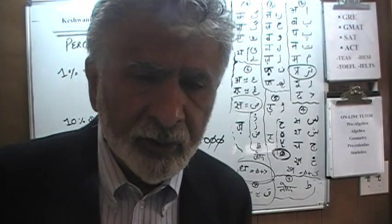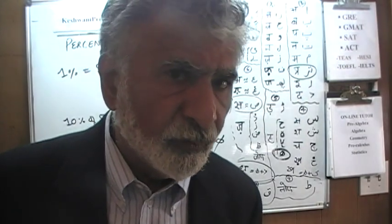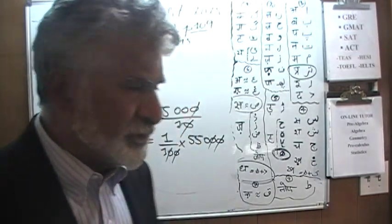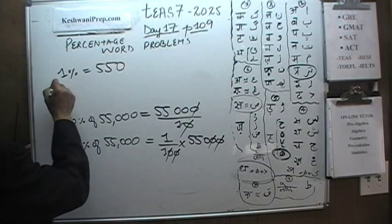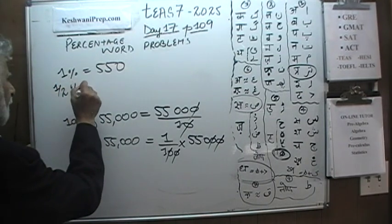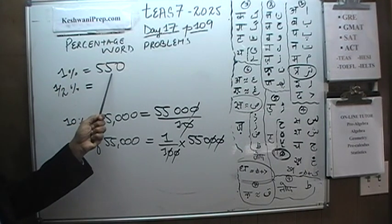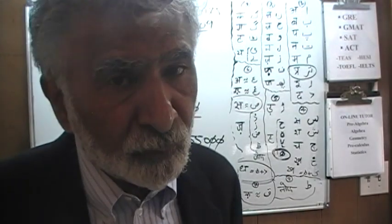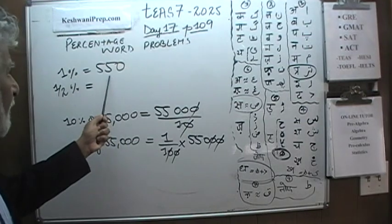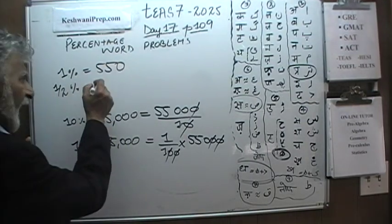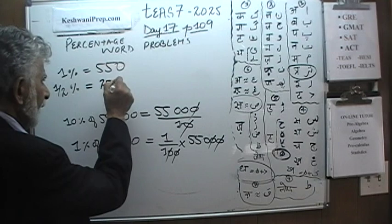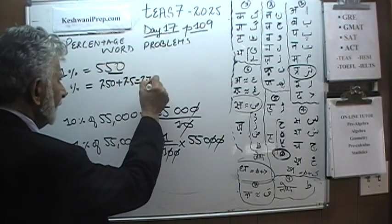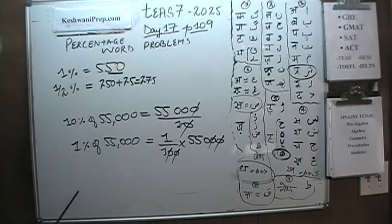We are not interested in 1%. We are interested in two parts: 4% and half a percent. Let's do half a percent first. If 1% is 550, half a percent must be half of that. Half of 500 is 250 and half of 50 would be 25, so that's 275. That part is done.